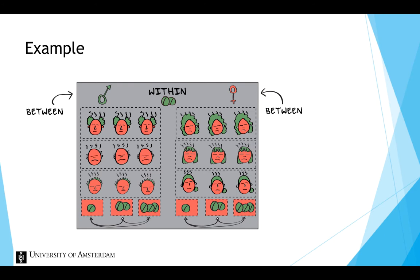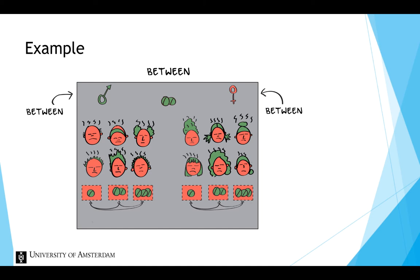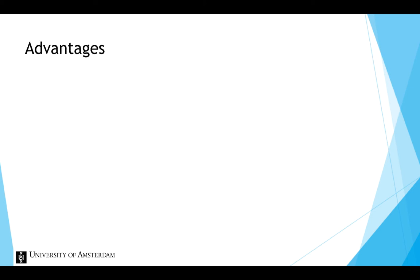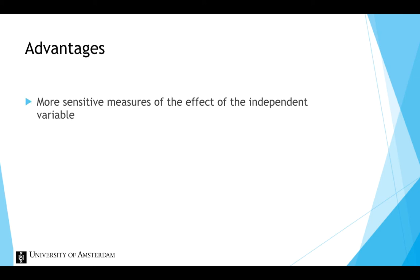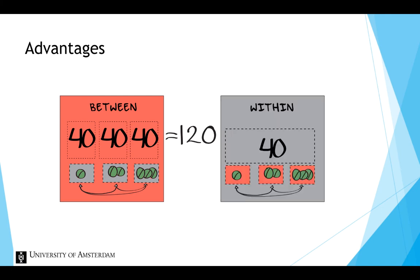We could have also tested the effect of dosage and gender without using repeated measures, but with a between-between design, with men and women assigned to one of the dosage conditions. However, the advantage of a repeated measures design is that it provides more sensitive measures of the effects of the independent variable, but also that fewer participants are required. If you wish to have 40 observations for each condition, you would need 120 people for a between-participants design, whereas with a repeated measures design, you would only need 40 participants to obtain the same number of observations, because all participants are tested three times.